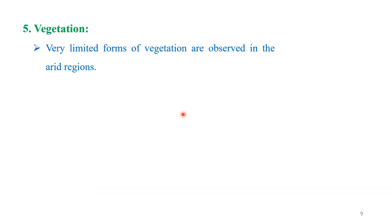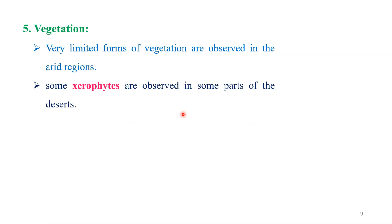If you see the next feature, that is vegetation observed in the desert region, you will observe a very limited form of vegetation in the arid region. Due to the absence of rainfall and too much high temperature range in this region, the vegetation type is affected. But some xerophytes — a type of vegetation — are observed in some parts of the desert. Xerophytes means a plant that is adapted to life in dry conditions. That type of vegetation or plants we have in the desert region.